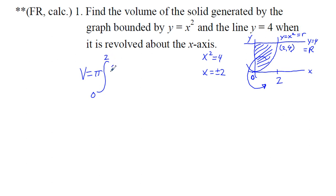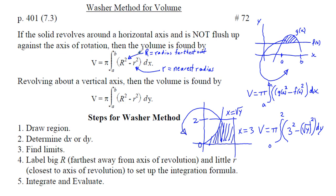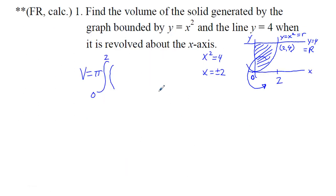We set up the integral: V equals pi times the integral from 0 to 2 of big R squared minus little r squared dx, which is 4 squared minus x squared squared, all times dx.